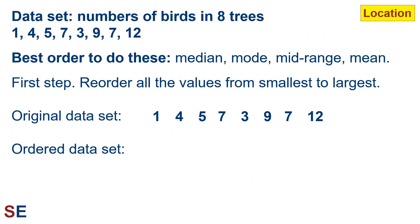Let's look at our data set. This will be the number of birds in eight different trees, so we've measured eight trees and counted the number of birds. We've gotten the values of 1, 4, 5, 7, 3, 9, 7, and 12.